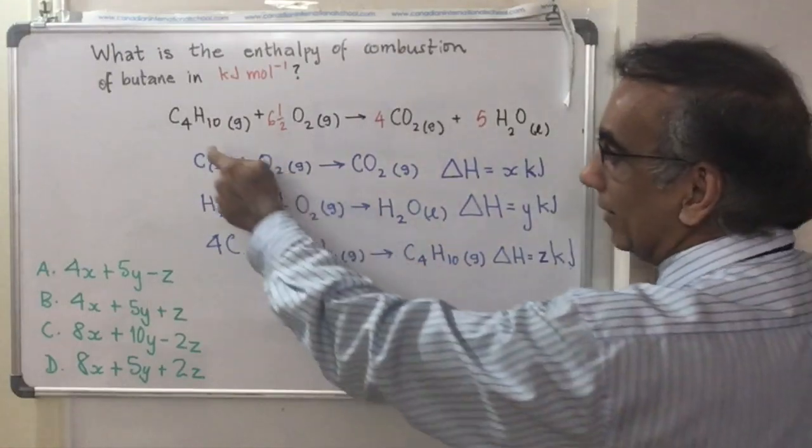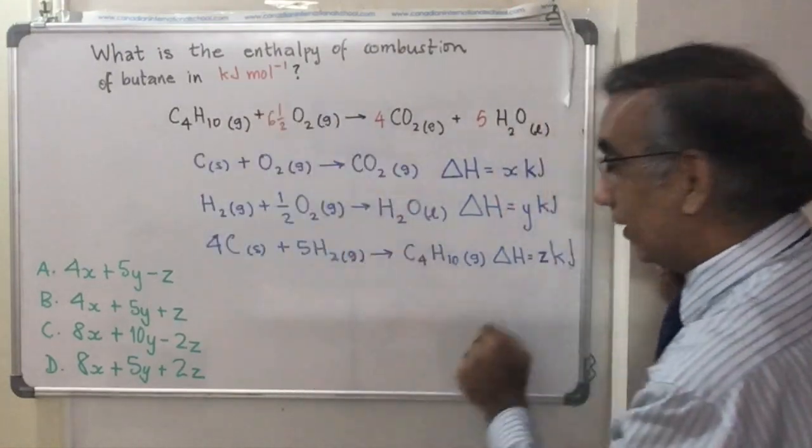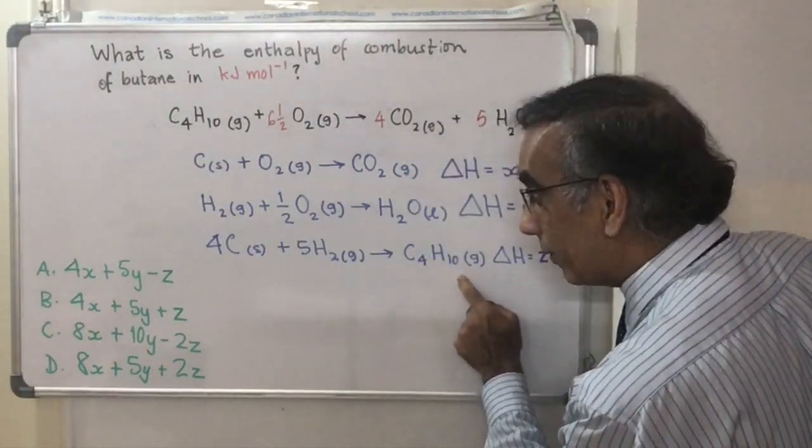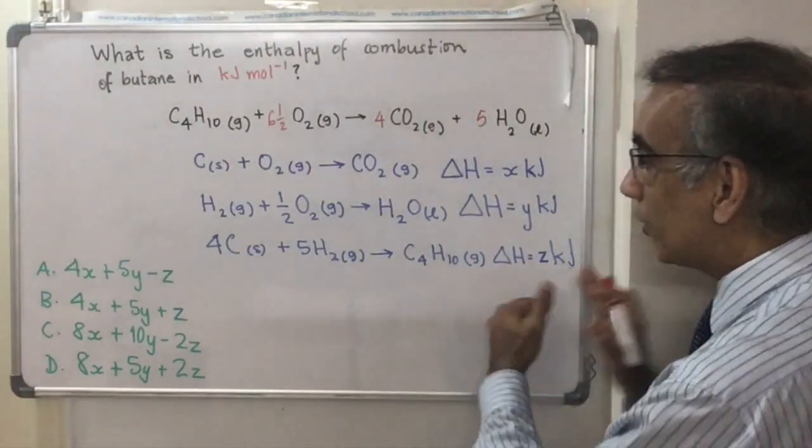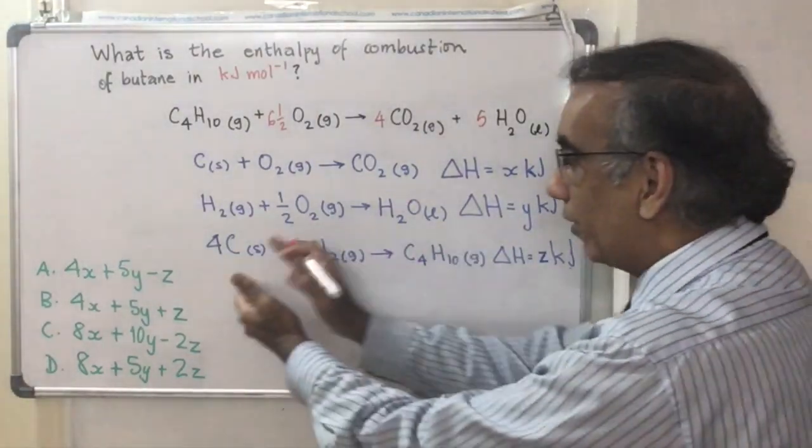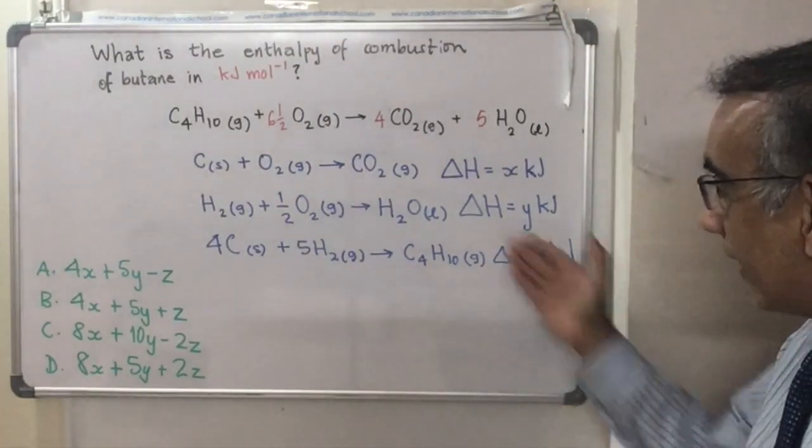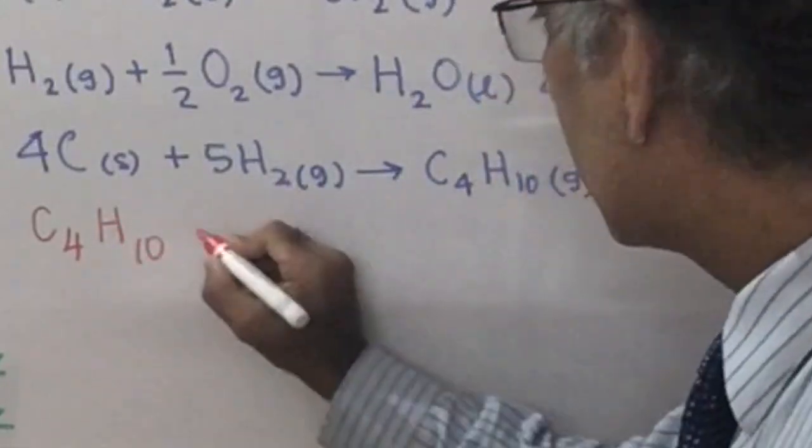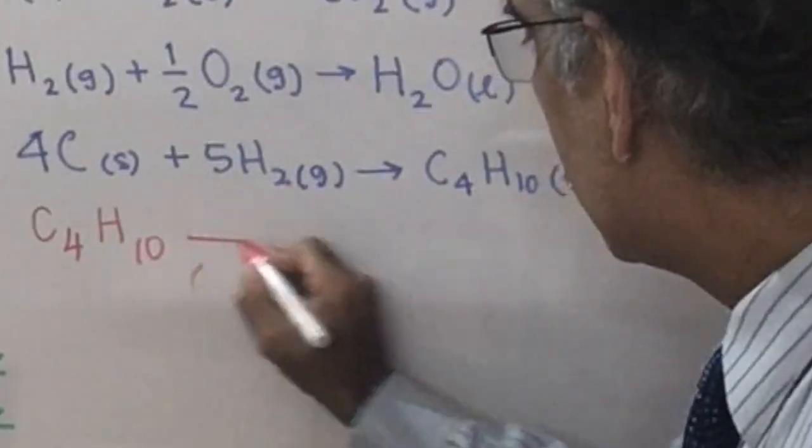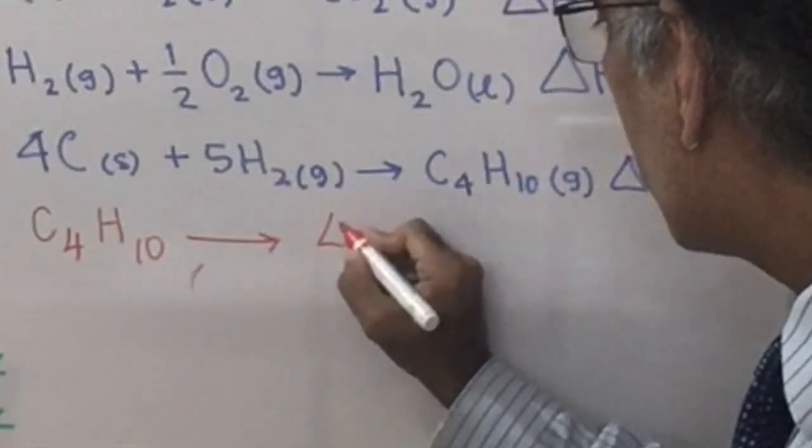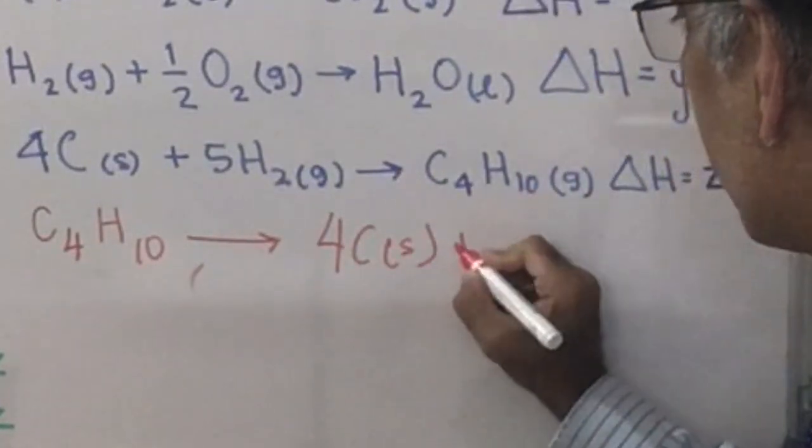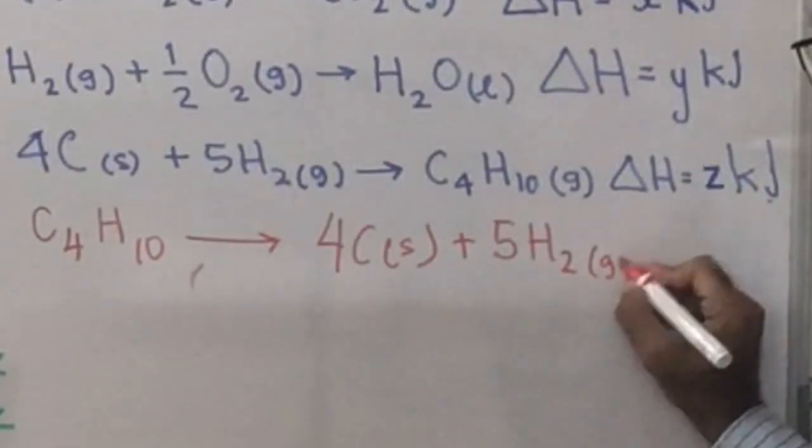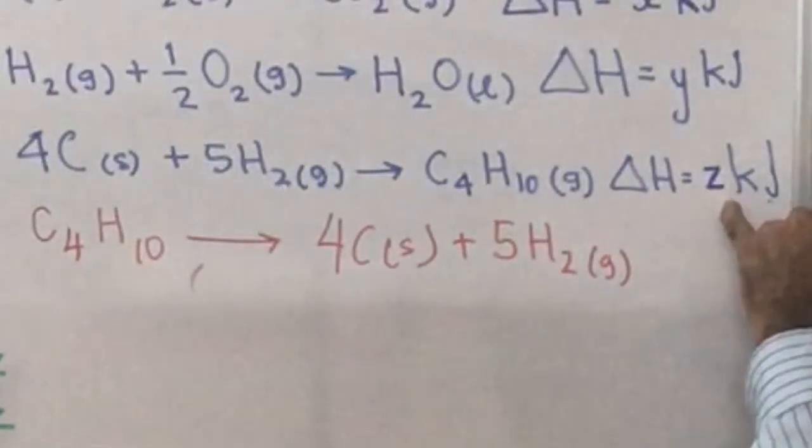So, first of all, we look at butane, which is the molecule in question that we've got to calculate the enthalpy of combustion for. And butane is found here on the product side of this equation. So we need to reverse this equation, first of all, to put butane on this side. So let's rewrite this equation and it becomes C4H10 to give 4C solid plus 5H2 gas and then not to forget that delta H would have to become negative Z.